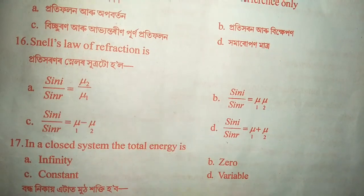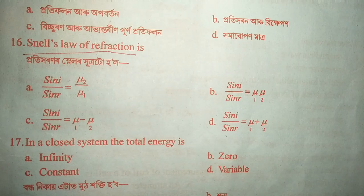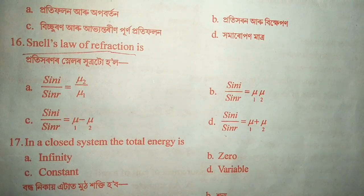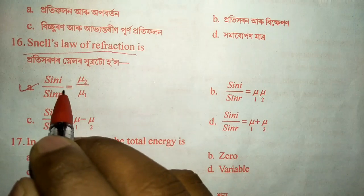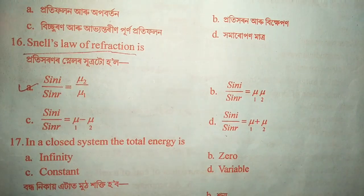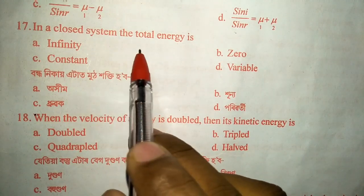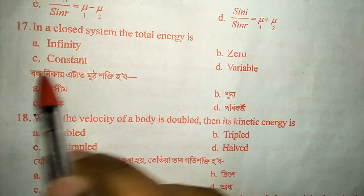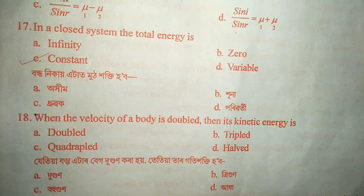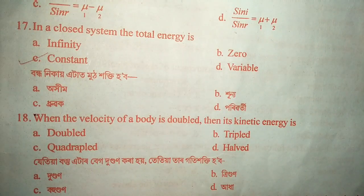Question number sixteen: Snell's law of refraction. The answer is option A — sine i divided by sine r equals mu2 divided by mu1. Question number seventeen: in a closed system, the total energy is always constant. This is because the system is closed, so energy is not lost anywhere — it remains constant.